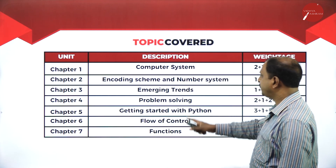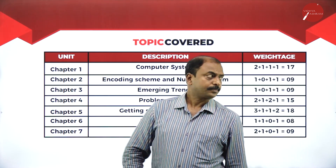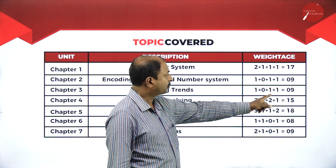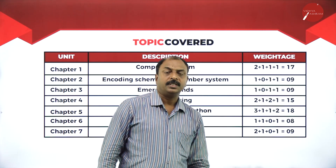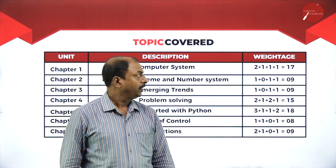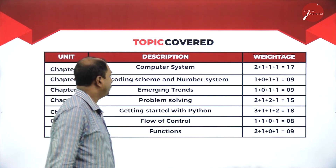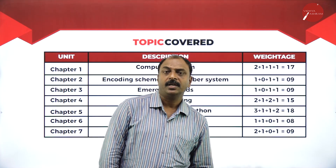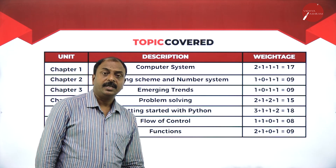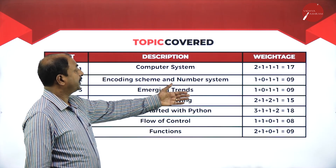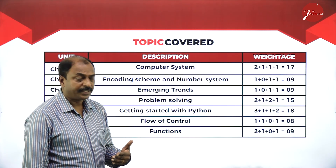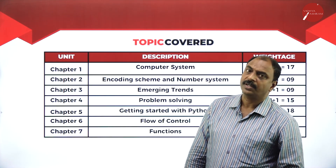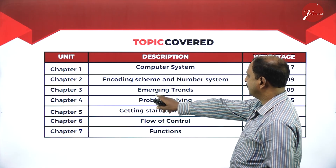Chapter 3 is Emerging Trends, with a weightage of nine marks — one MCQ, one three-mark question, and one five-mark question. Here we learn new technological terms such as IoT, environmental technology, artificial intelligence, and different applications of computer systems. We learn the basic definitions of these different technologies in the field of computer science.